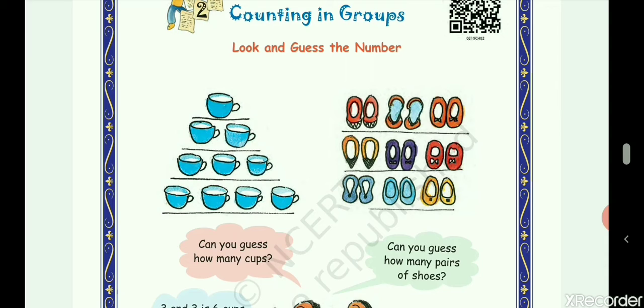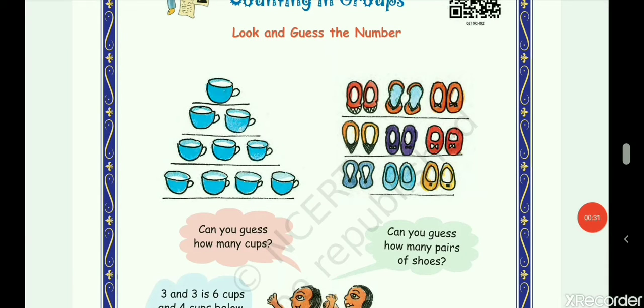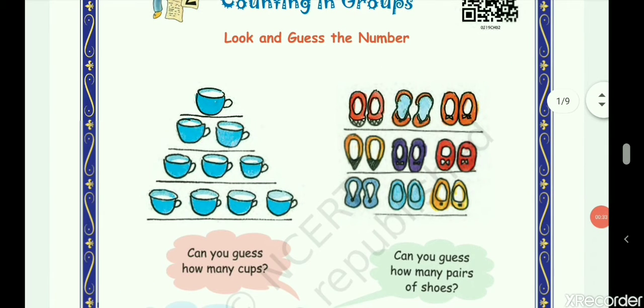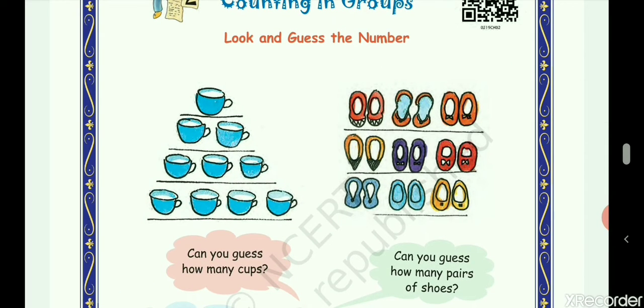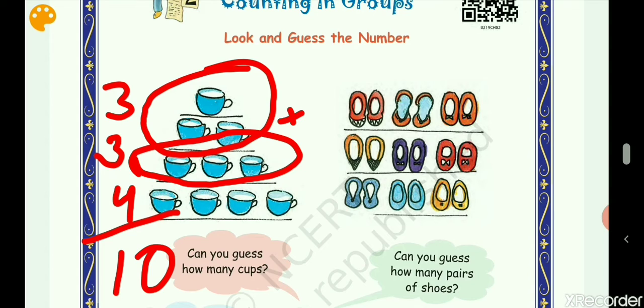There is a very small activity and very small method to count. We can count like this: three cups and three cups, we can add these two pairs, three plus three is six, and we can add these four cups also, so it would be 10 cups. It would be very easy for us by doing this.